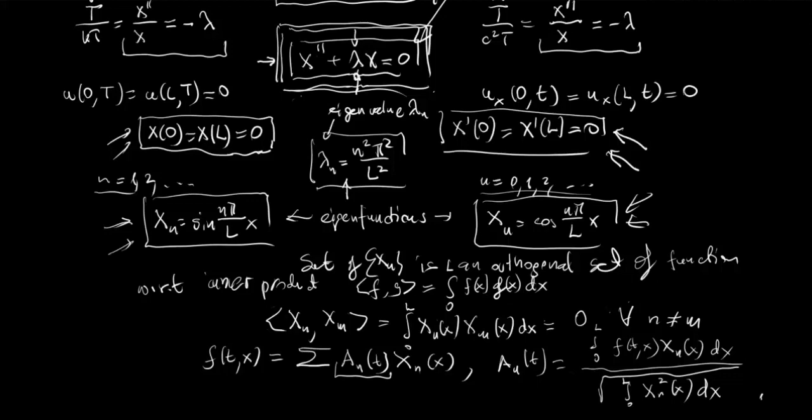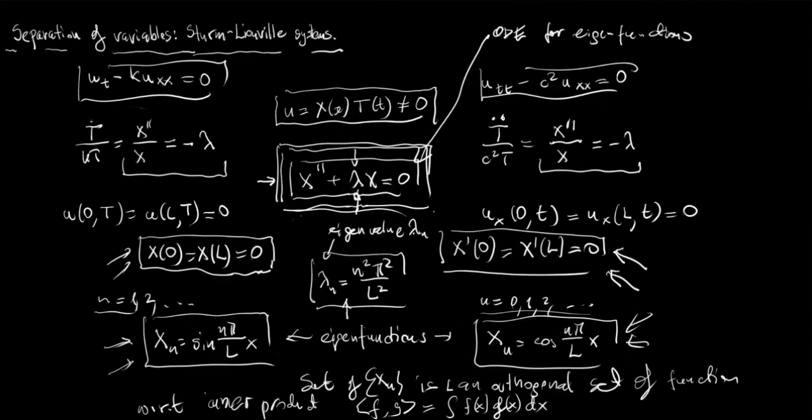Having such an orthogonal system of functions means that, according to Fourier, we can write any function of x as an infinite sum over n with coefficients a_n of x_n(x), where these coefficients can be calculated as the integral from 0 to L of f(x) x_n(x) dx divided by the norm of x_n, which is the square root of the integral from 0 to L of x_n squared dx.